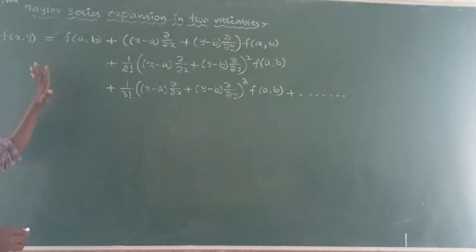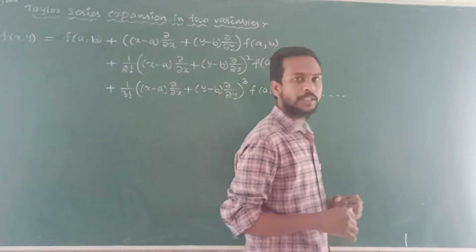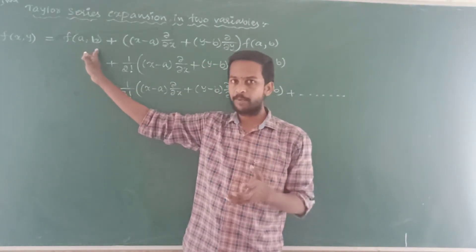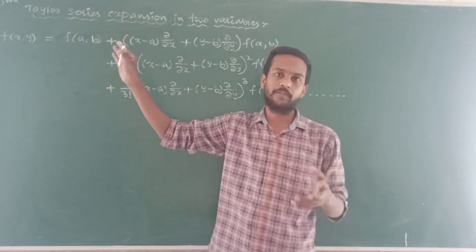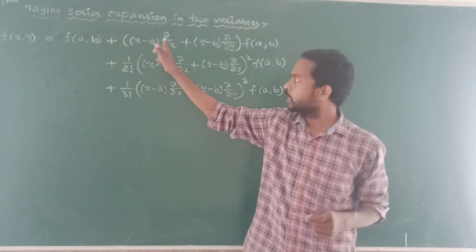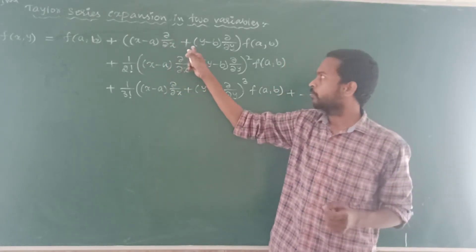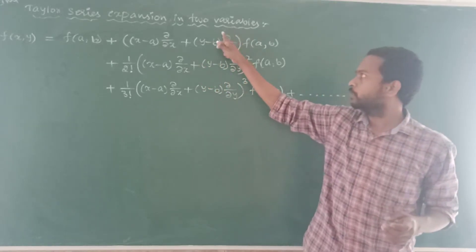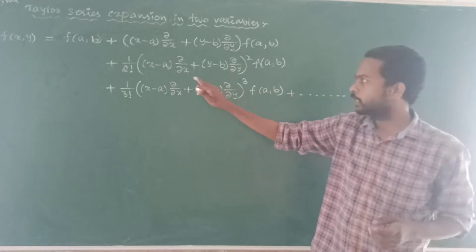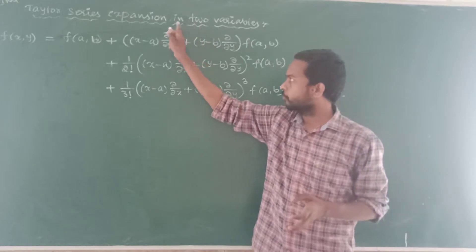This is a very easy and shorter formula to find the Taylor series expansion of a given function. That is: f of x comma y is equal to f of a comma b, where a comma b are the given point variables. So f of a comma b, plus x minus a into ∂/∂x — meaning partial derivative with respect to x — plus y minus b into ∂/∂y — partial derivative with respect to y — into f of a comma b.